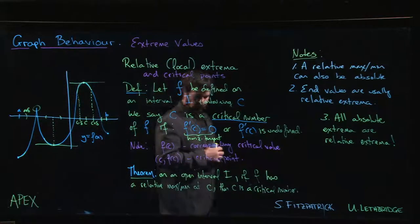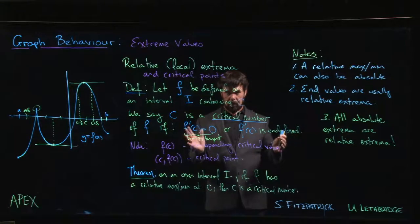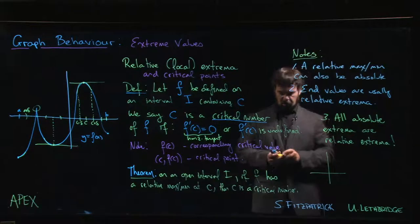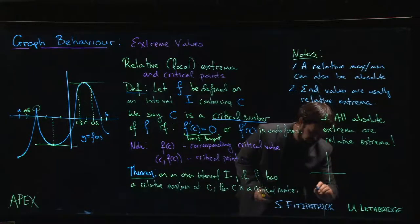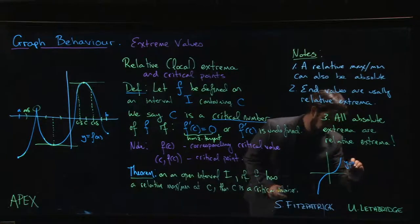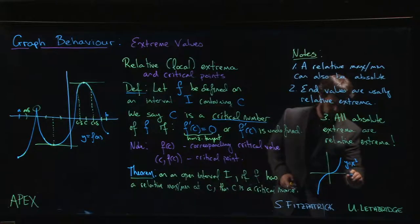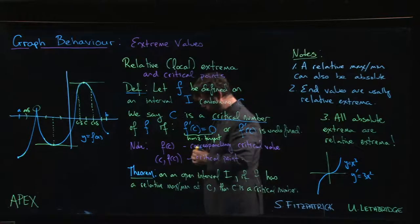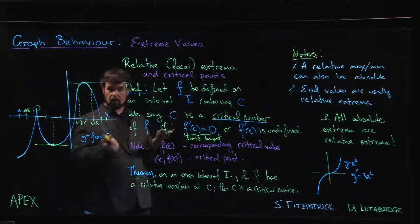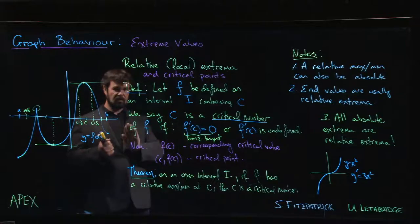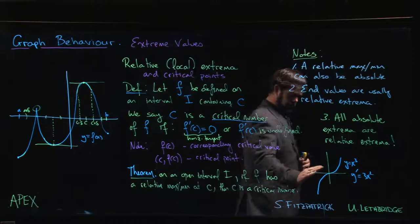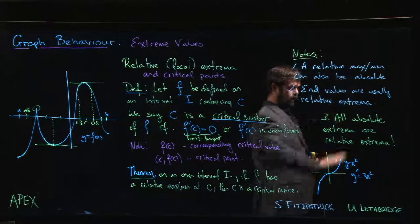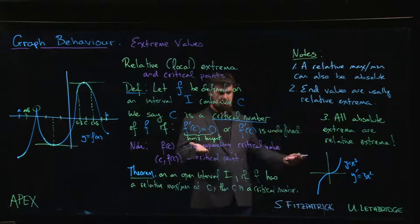One word of caution with this theorem: it says every relative max or min occurs at a critical number, but it doesn't say every critical number is a relative max or min. The standard counterexample is the basic cubic function y equals x cubed. We know y prime is 3x squared, which vanishes at zero, so at the origin you have a critical number. But there's certainly no maximum or minimum there — the function just levels off for a second with a horizontal tangent and then keeps going up. So there's no max, no min, but there is a critical number.